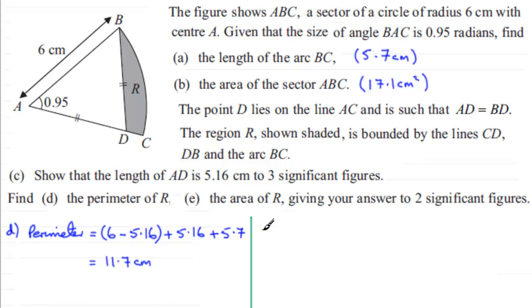So if we work out then for part E the area of triangle ABD is going to equal half the side AB which is 6 multiplied by the side AD which is 5.16 or you might prefer to use the unrounded version of this answer which is 5.1574 and so on. And then we multiply this by the sine of the included angle which is 0.95 radians. And if you work this out don't forget you need to be in radians mode because you're taking the sine of an angle in radians. And if you work this out on your calculator you should find you get 12.585 and so on. And that be measured in centimeters squared.